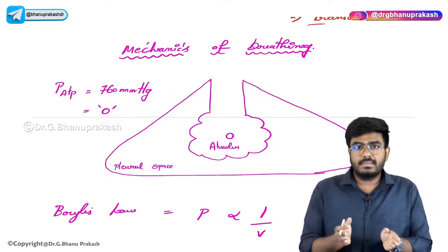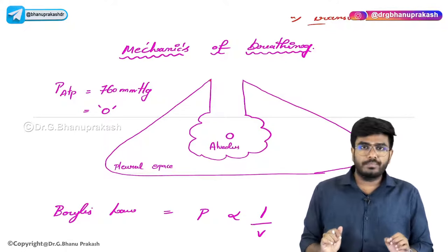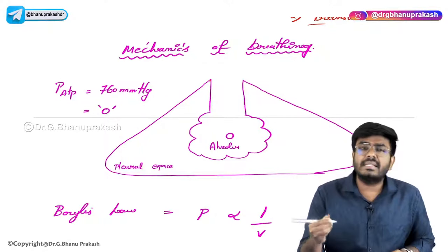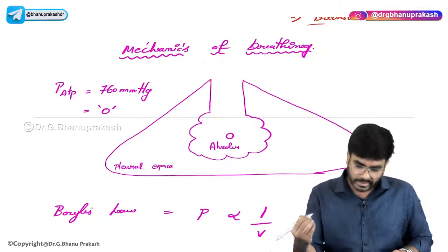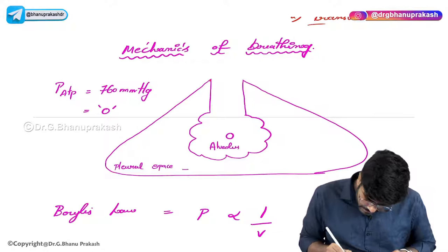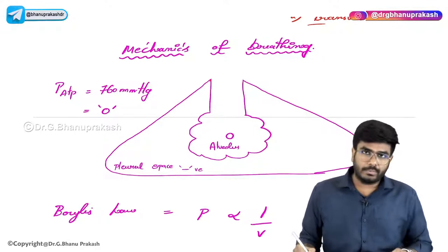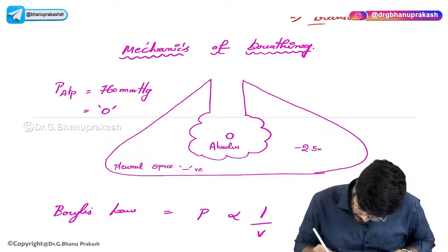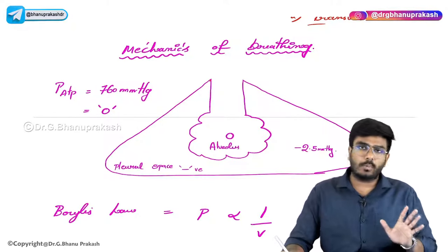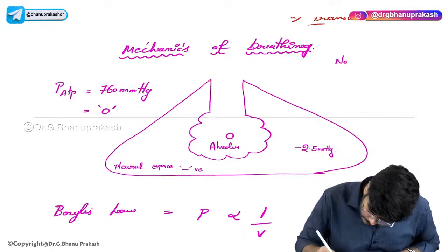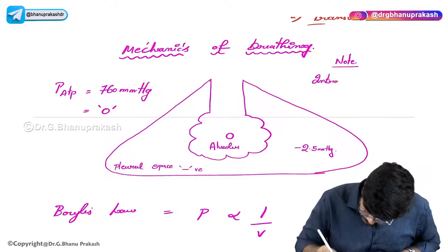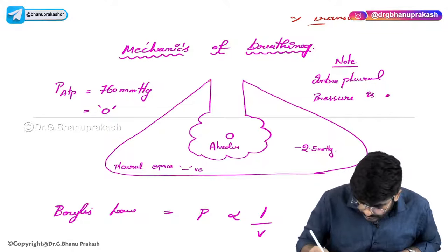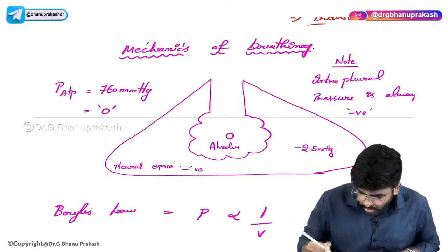Inside the pleura, the pressure is always negative. During resting state, the intrapleural pressure is minus 2.5 mmHg. Remember this very important note: intrapleural pressure is always, always negative.